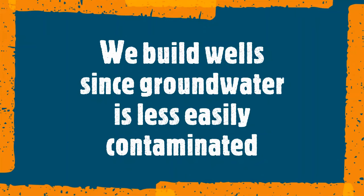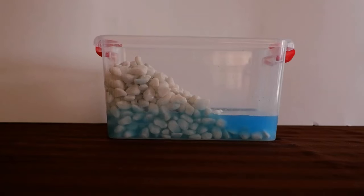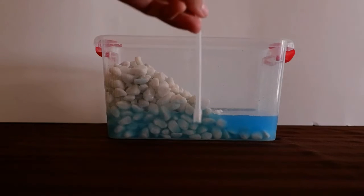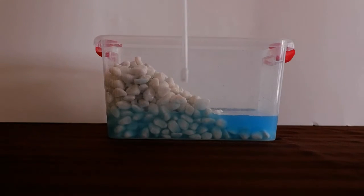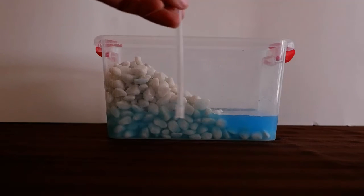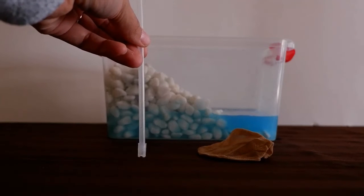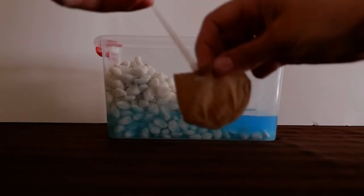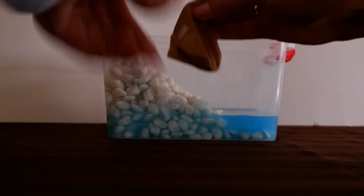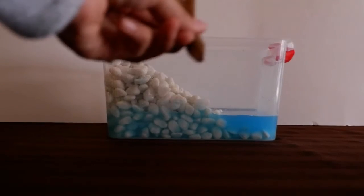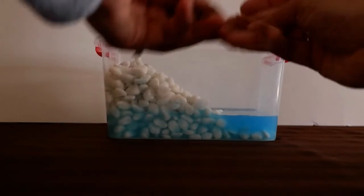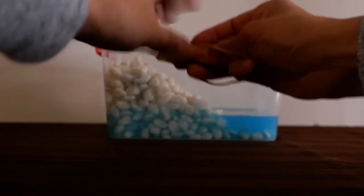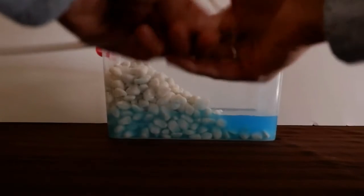To build a well, a pipe must be installed through the ground to reach the groundwater. A screen needs to be installed at the end of the pipe to make sure small pieces of sand and dirt do not enter the pipe. This nylon can be attached to the pipe with a rubber band and represents the screen that keeps the water we pull up clean.